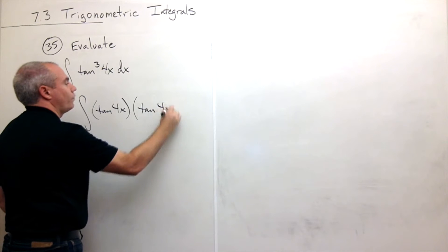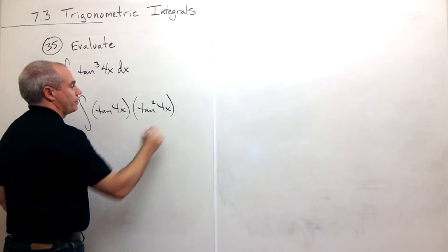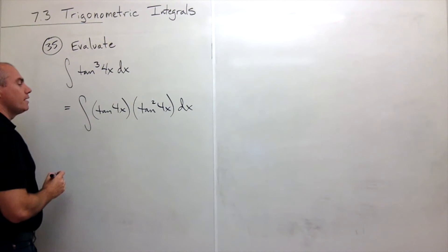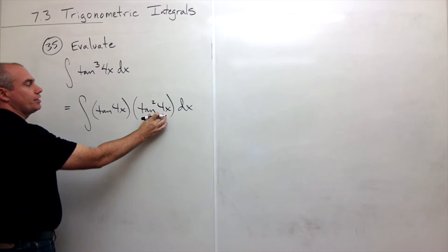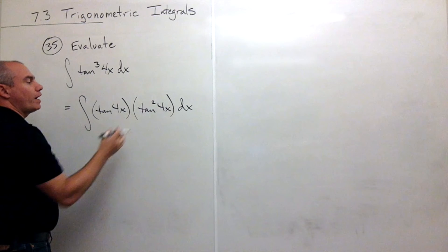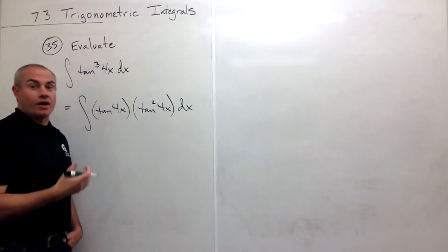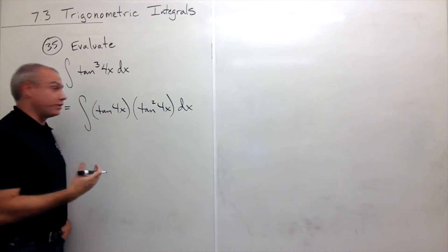a tangent of 4x quantity squared dx. Now I know by a trig identity that tangent of 4x squared can be written as secant squared of 4x minus 1. So let's write it that way.